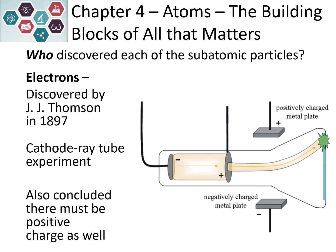Electrons were discovered by JJ Thomson back in 1897. He was doing an experiment using a cathode ray tube — essentially the same technology as an old thick tube TV. He would shoot particles through an electric field, and he found that the particles that came out were attracted towards a positively charged metal plate, which means they were negatively charged.